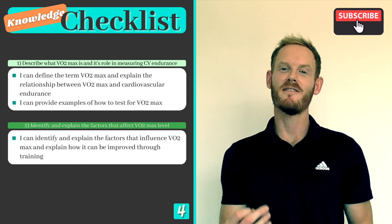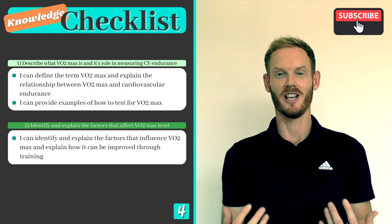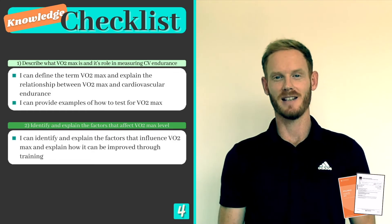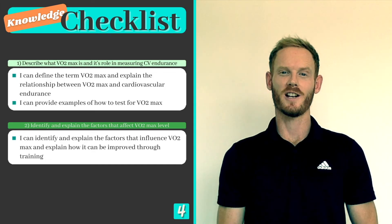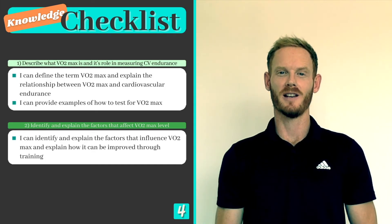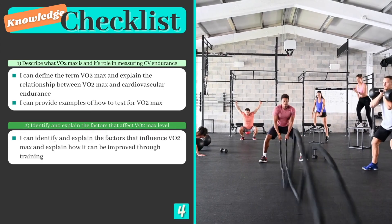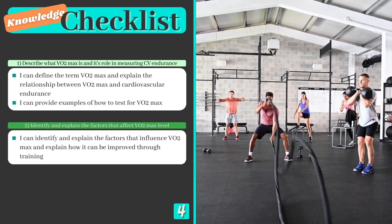You've now covered everything you need to know on topic 6.6 VO2 max. You can find a link to the Cambridge past paper database down in the description, so why not go and look for some questions on the topic and practice applying what you've learned. In our next lesson we'll move on to Chapter 7, starting with Topic 1 on the Principles of Training. I hope you found this lesson useful, and I'll see you in the next one.